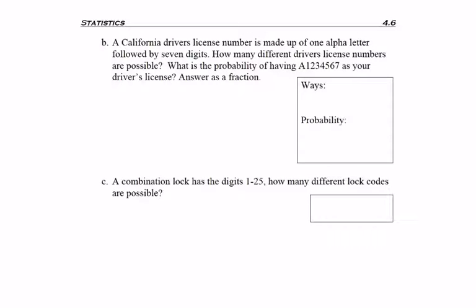Question B. A California driver's license number is made up of one alpha letter followed by seven digits. I'm talking the driver's license that you have on you, not your license plate on your car. How many different driver's license numbers are possible? What is the probability of having A1234567 as your driver's license? Answer as a fraction.